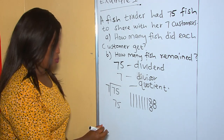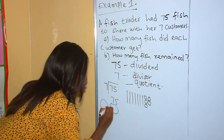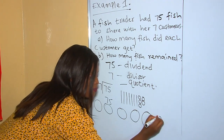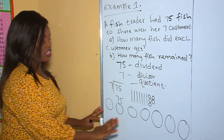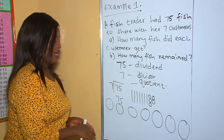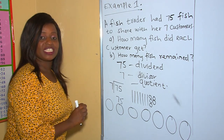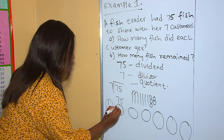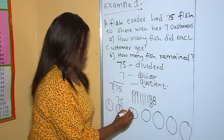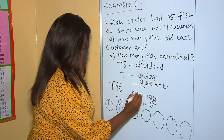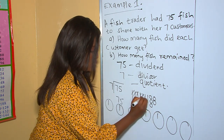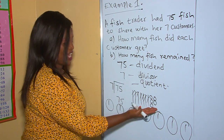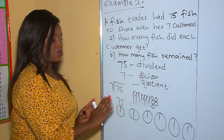Now we have seven tens and five ones. Let's start sharing with our seven customers: customer one, two, three, four, five, six, and seven. They should get equally. The first ten goes to the first customer, the second to the second, the third to the third, the fourth, fifth, sixth, and finally the seventh.